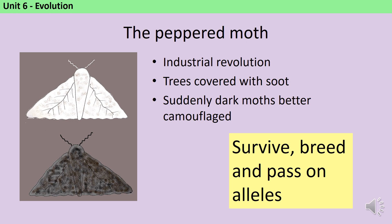It wasn't the case that individual moths changed their wings. This was a process that took many generations and involved moths with darker colouring surviving longer and having more babies. Eventually, as new regulations came in and air quality improved, the number of black moths decreased again.